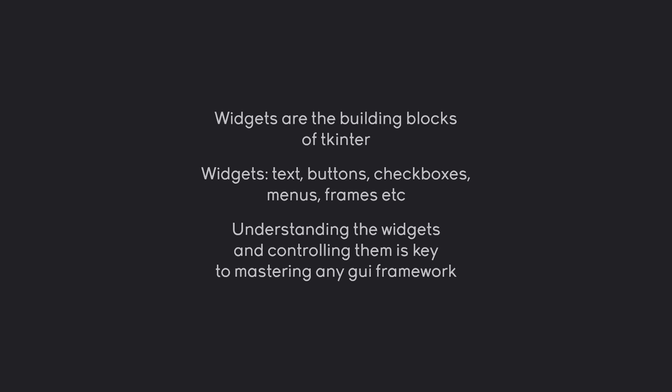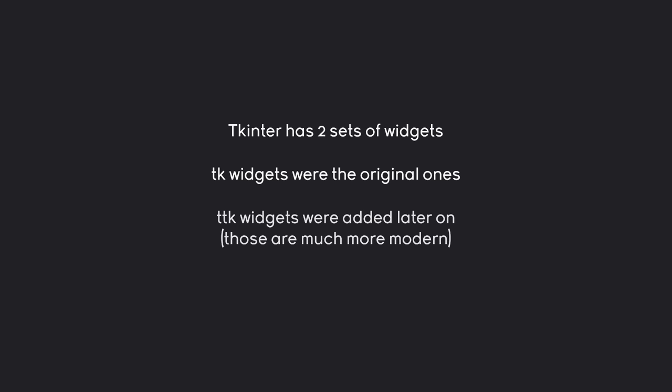Inside tkinter, we have two sets of widgets: tk widgets and ttk widgets. The original tk widgets were made in the original part of tkinter — they work, but look quite outdated, having been made in the 90s. ttk widgets were added much later, look much better, and have some extra functionality, which is why we use them primarily.